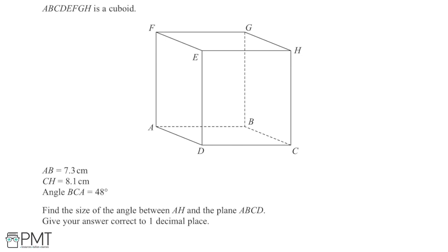So in this question, I'm given this cuboid, which I can see in the diagram, and I'm told some information about it. I'm told here that the length AB is going to be 7.3 centimeters, so I can label that up to begin with, here, 7.3 centimeters. And because I'm working with a cuboid, I also know that the length DC, EH and FG are all going to be equal to AB, they're all going to be 7.3 centimeters.